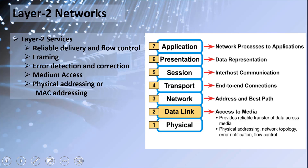When the frame reaches the destination, the data link layer decapsulation happens, where the source and destination MAC addresses are stripped off and it is handed over to the network layer for further routing and forwarding. This encapsulation and decapsulation happens at each device in the path, depending on the type of device — not just at the source and destination.